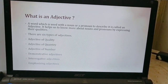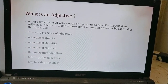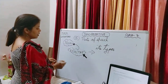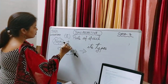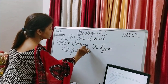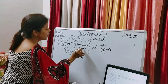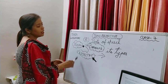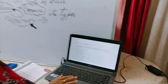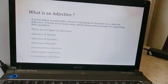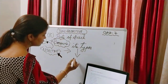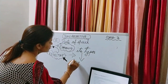An adjective helps us to know more about nouns and pronouns by expressing their qualities. Mainly, adjectives talk more about nouns, and at times they talk about pronouns as well. Let's go through the basic six types of adjectives.